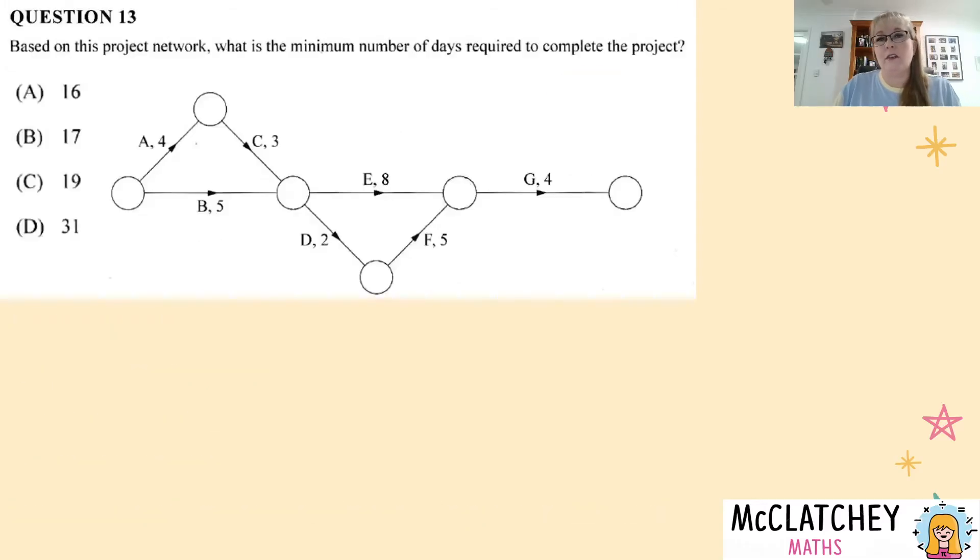Our second question for decision mathematics in the multiple choice part of this paper is a project network and it's asking us what's the minimum number of days required to complete the project. Now to do this we only need to forward scan through the network so that shouldn't take us too long. It's a fairly simple network. So just acknowledging that to get to the end of the network from right to left once we've got that number in the very far right vertex that's our minimum number of days. We don't need to backward scan as well, that's a waste of our time.